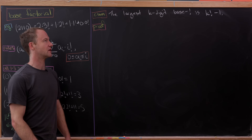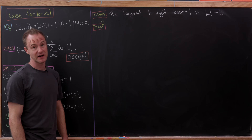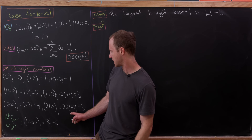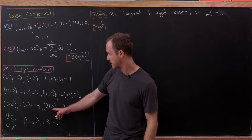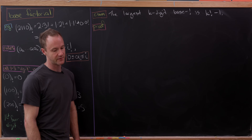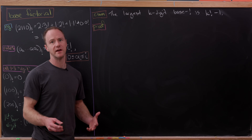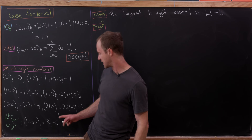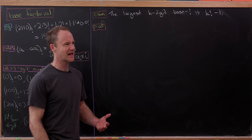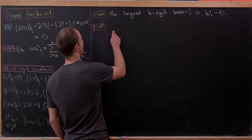The first 4-digit number, 1-0-0-0 base factorial, is 6. This is an example of an important fact we'll use later: the largest K-digit base factorial number is, in fact, K factorial minus 1. The largest 3-digit number is 3 factorial minus 1, which is 5. It's pretty clear what that number is — it just achieves all of the maximum digits.